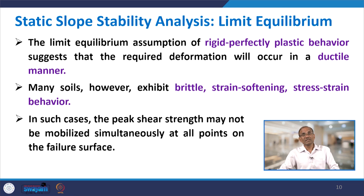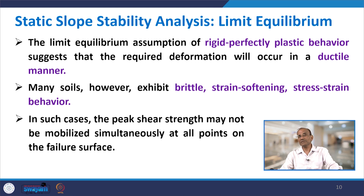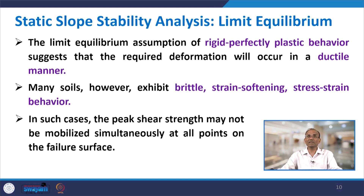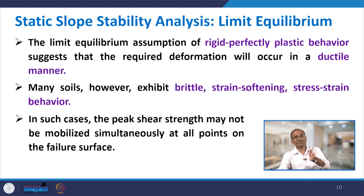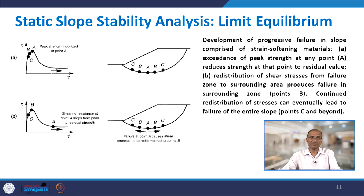The limit equilibrium assumption of perfectly plastic behavior suggests that required deformation will occur in a ductile manner. Many soils, however, exhibit brittle strength-softening stress-strain behavior. In such cases, the peak shear strength may not be mobilized simultaneously at all points on the failure surface. That is, the peak strength will not be reached at each and every point on the failure surface at the same time.